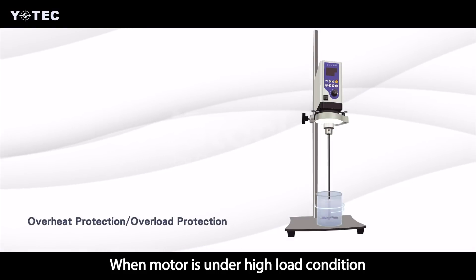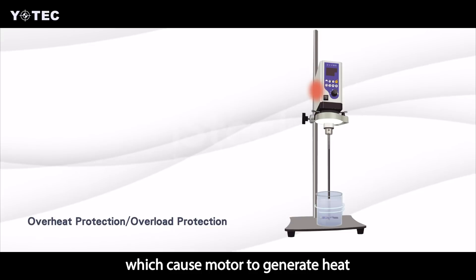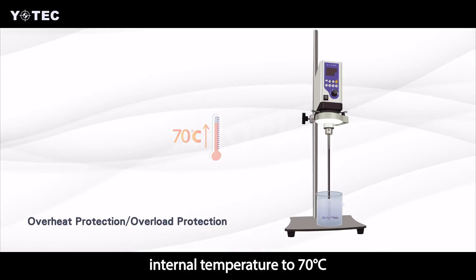When motors work under high-load conditions, they generate heat. When the system detects the internal temperature at 70 degrees Celsius, it will stop the mixer automatically.